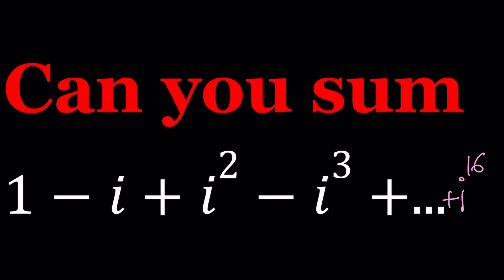So, we're supposed to add 1 minus i plus i squared minus i to the third plus i to the fourth minus i to the fifth, all the way up to i to the power 16. In other words, even powers of i are going to come with a plus sign, and the odd powers are going to come with a minus sign. And we're going to be finding the sum, writing it in simplest form.